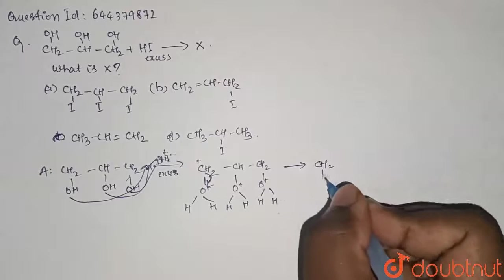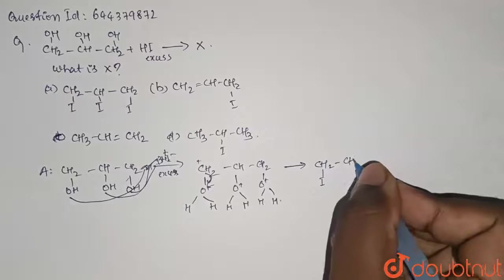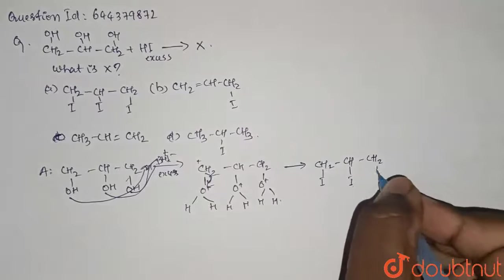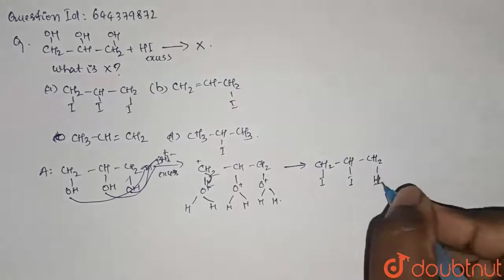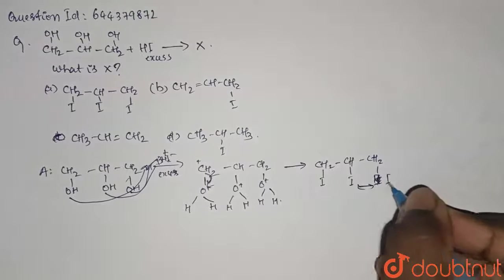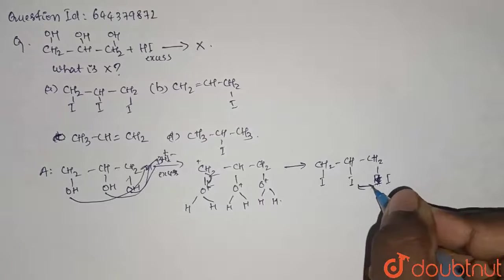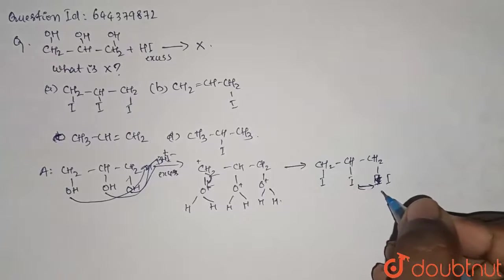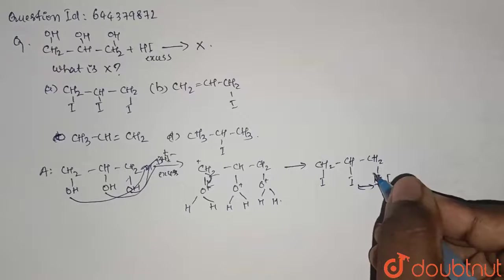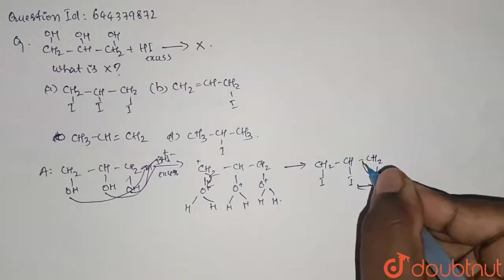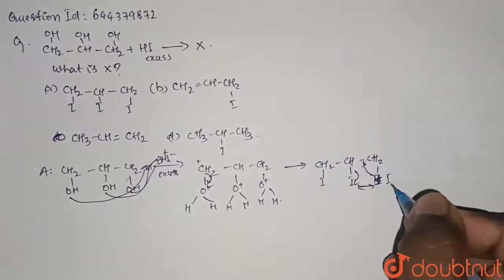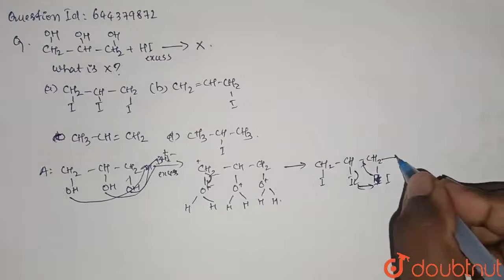It will form a compound like CH2I-CHI-CH2I. Here, these two iodines, their plan will be to go out as I2. Iodine is a bulky group where the repulsion factor is dominant. Therefore, they'll donate the lone pair and go out as I2.